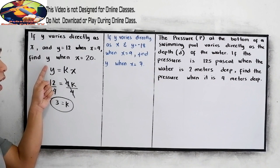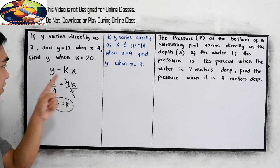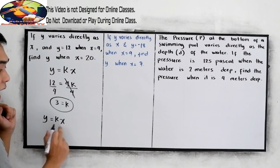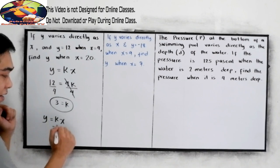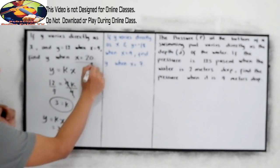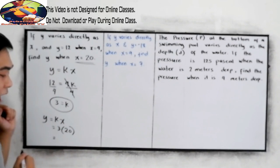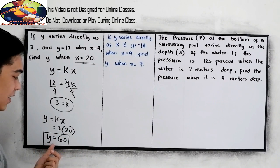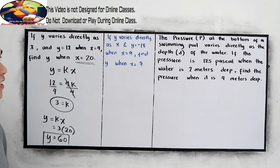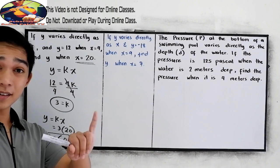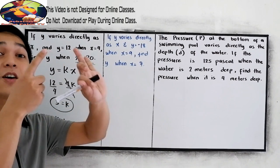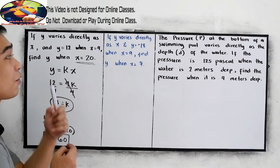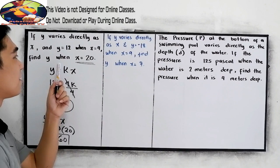The question is: find y when x is equal to 20. So we need to find y when x is 20. Using the original equation y = kx, substitute our k = 3 and x = 20. So y = 3 times 20, that is 60. Therefore, the value of y is 60. Our three steps: first, find the equation of variation; second, find the constant of variation; and third, substitute the value of the constant of variation to find the value of the missing variable.